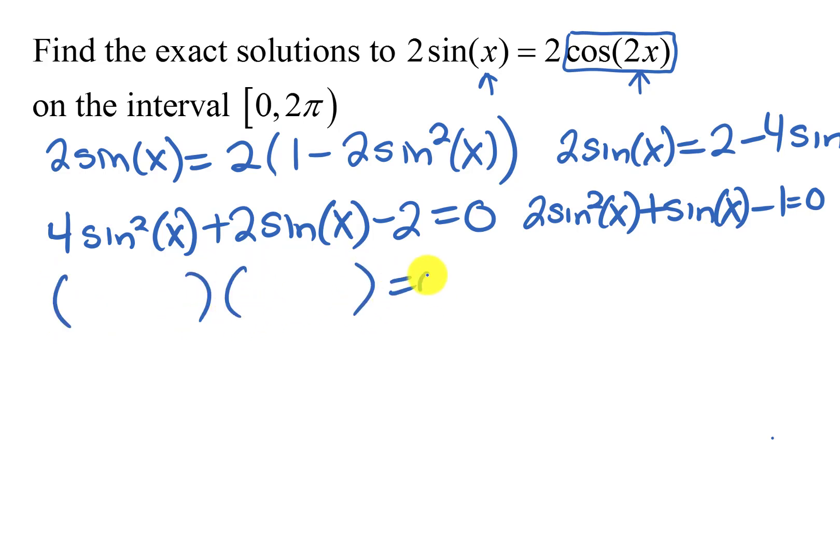So I'm going to make two sets of parentheses to factor this. To give me a 2 sine squared x for the first term I'm going to have a 2 sine x and a sine x. And then to give me a 1 on the end I'm going to have 1 and 1 but to get a negative I have to have 1 positive and 1 negative and I want the middle term to be positive.